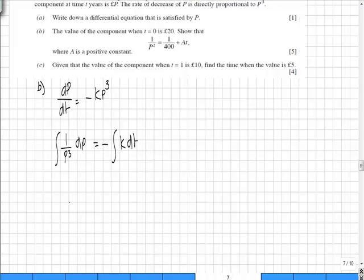Integrating 1 over p cubed we know that that's p to the power of minus 3 which will go to minus a half p to the minus 2. So in other words it will become minus 1 over 2p squared is equal to minus kt.